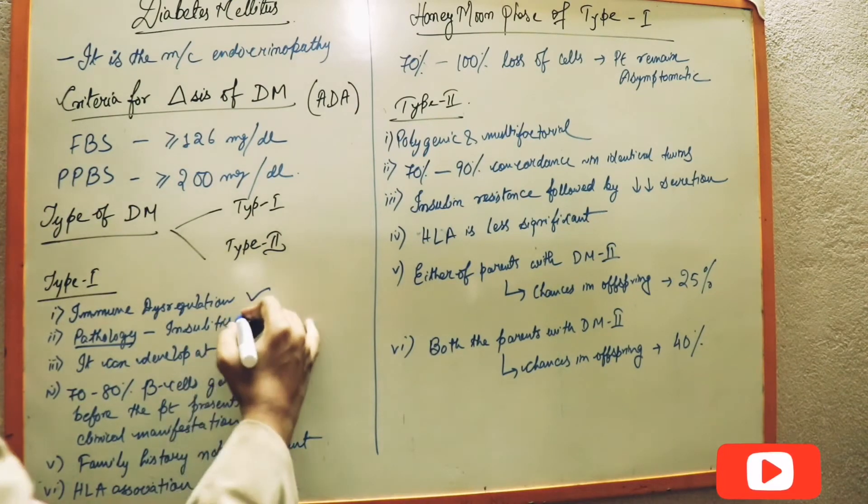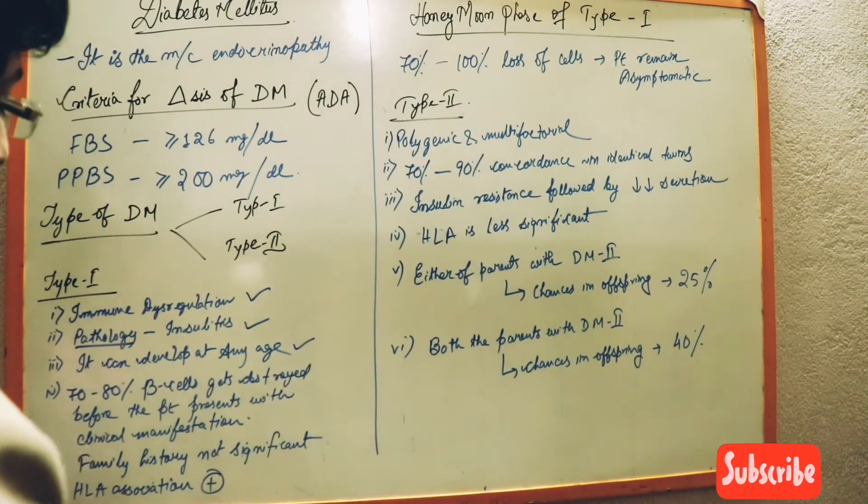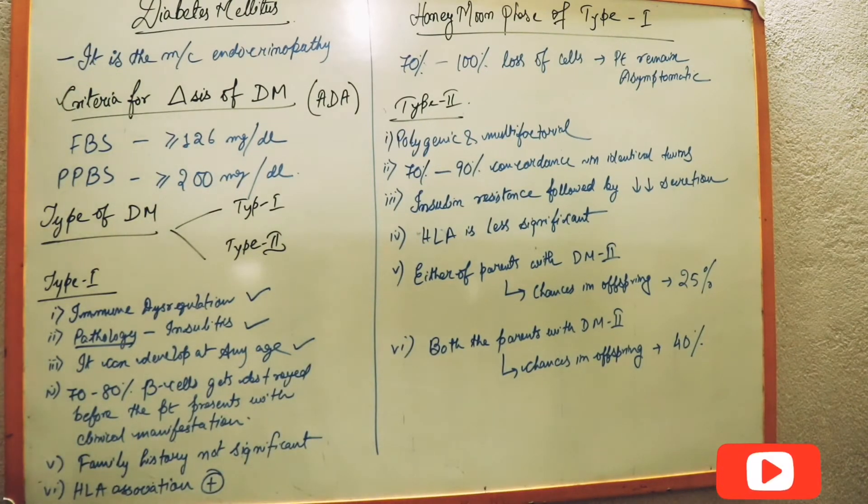It can develop at any age. We should not be worried that our parents are having diabetes mellitus type 1, so we must have diabetes type 1. That is not the case. It can occur at any age and we should not bother about family history.